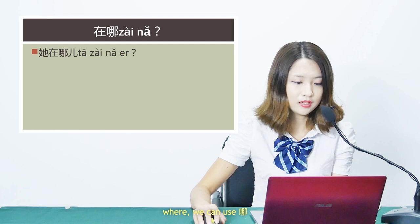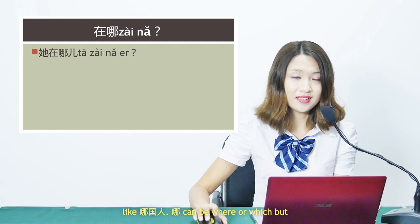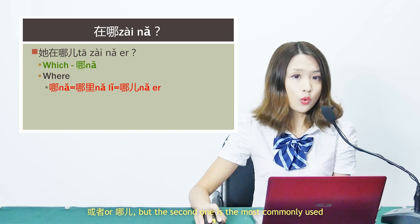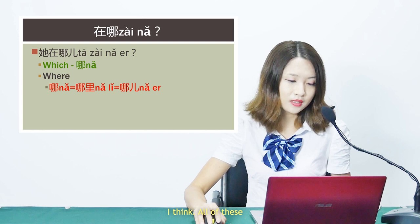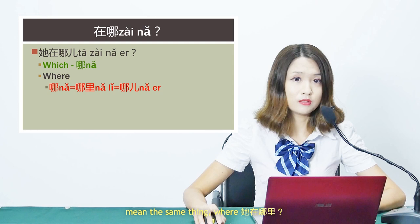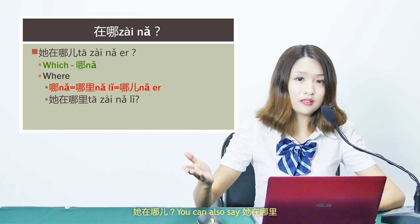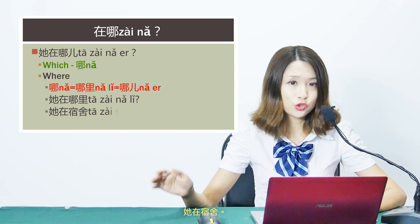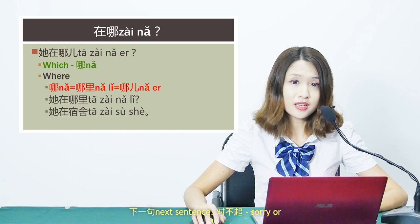下一句 — next sentence. 她在哪儿? — Where is she? 哪 can mean where or which. When it means where, you can use 哪, 哪里, or 哪儿 — all three mean the same thing. 哪儿 is the most commonly used. 她在哪里? or 她在哪儿? — Where is she? If she is in the dormitory: 她在宿舍.